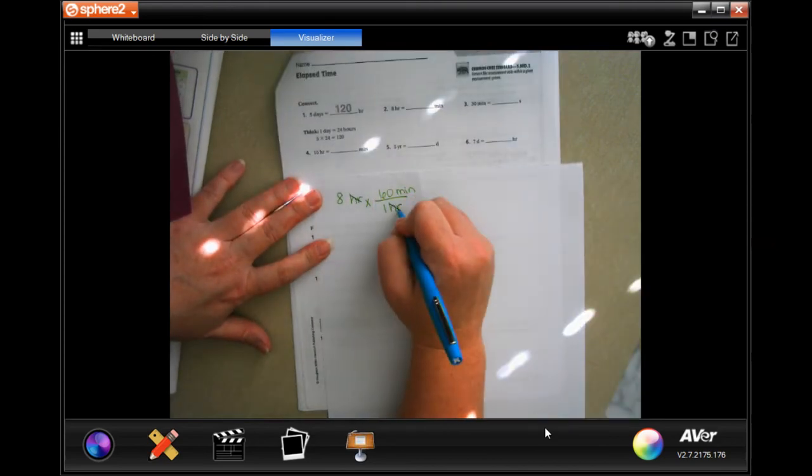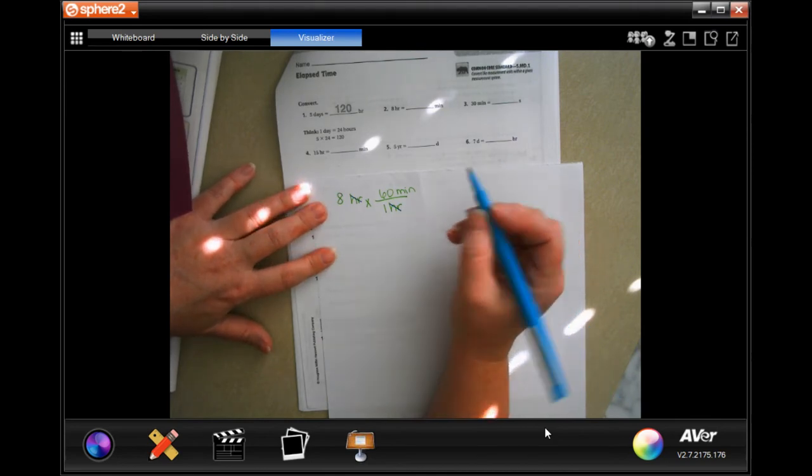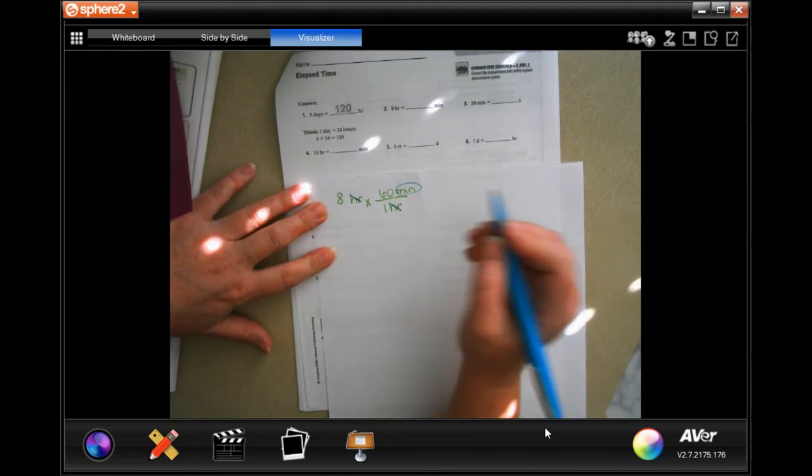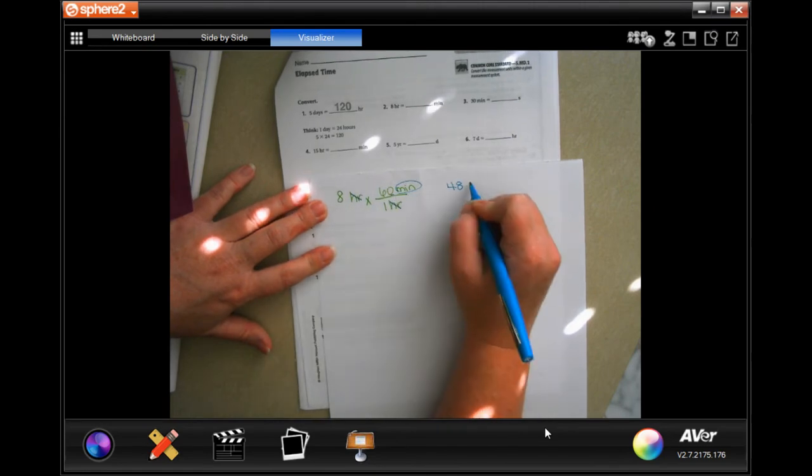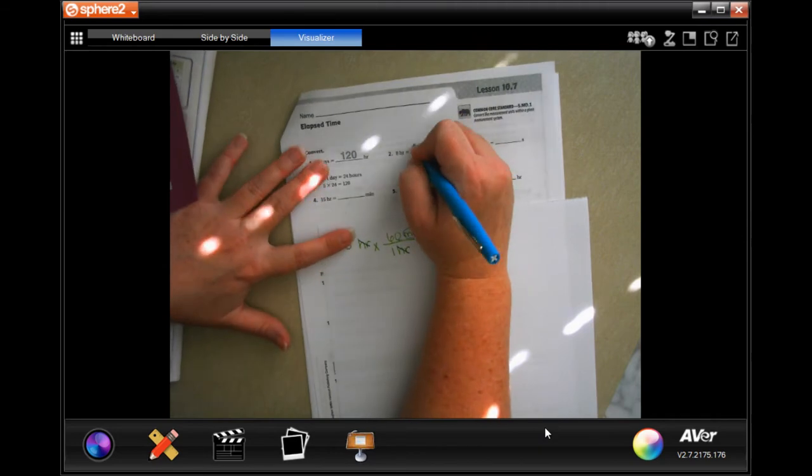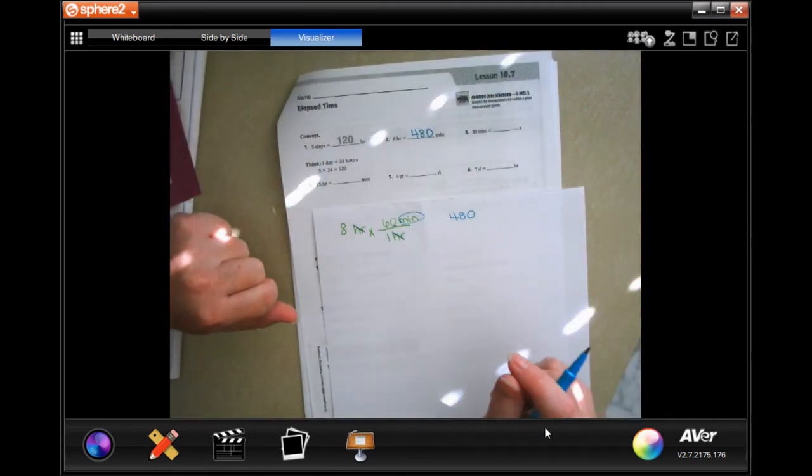We can cancel out our labels that match top and bottom, left in minutes - that's what we want. And 8 times 6 is 48, tack on that zero, 480 minutes.